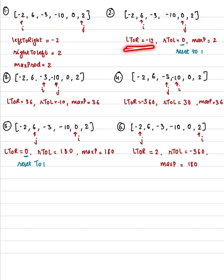This way, left to right product is -12, but we encountered a zero so we have to reset the product to one. And the maximum among these two we have to find. Similarly, we'll again move towards this side.